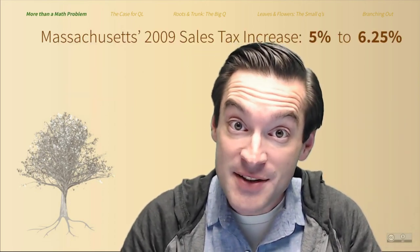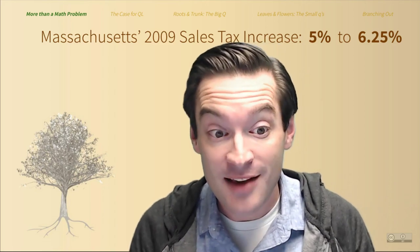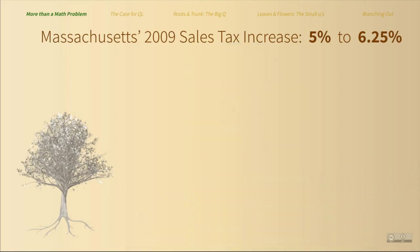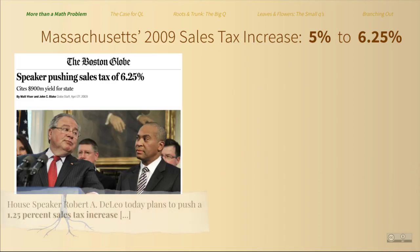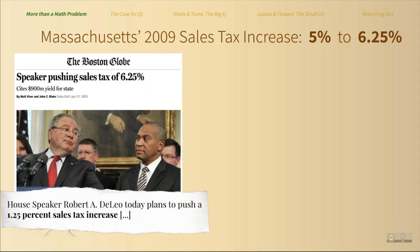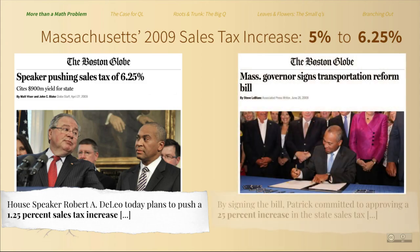In 2009, Massachusetts legislators proposed to raise the state sales tax from a rate of 5% to 6.25%, just the second increase in the tax's history. Needless to say, the proposal was divisive. In an April article, the Boston Globe called it a 1.25% increase. And then later in June, when the proposal was on the verge of passing, the Globe ran an Associated Press article that called it a 25% increase. Both articles are referring to the same tax proposal.